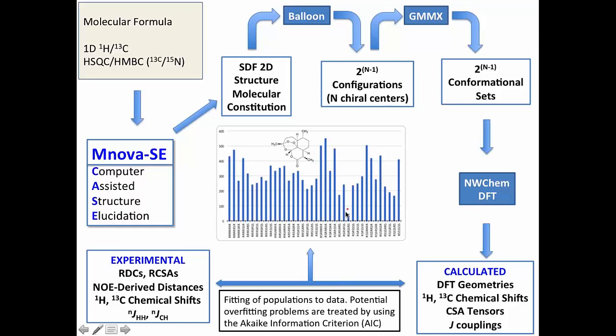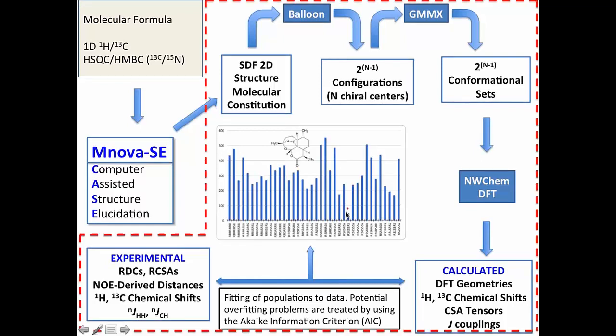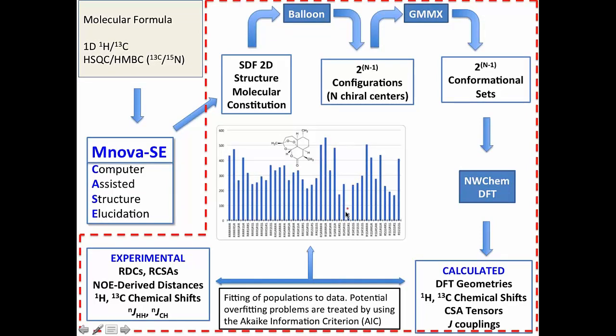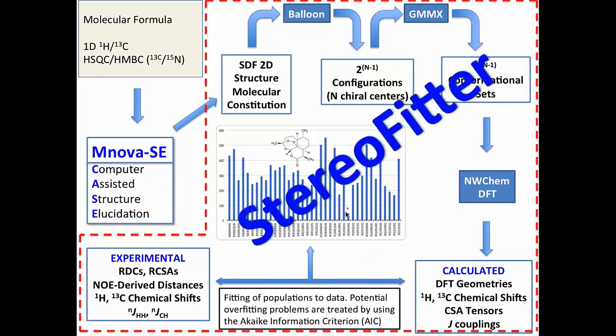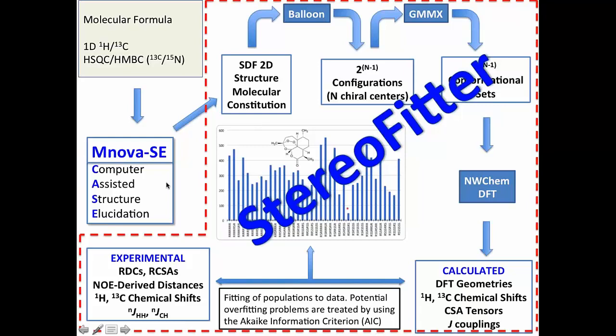And it will tell you which one is the correct relative configuration. So this module, the name is Stereofilter, and will be a separate module. And it will be a kind of plug-in that you will have to pay for a separate license. So the Ennova tool will have the Structure Elucidator and the Stereofilter, and they can interact together.